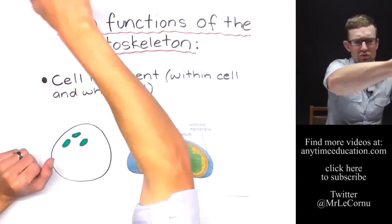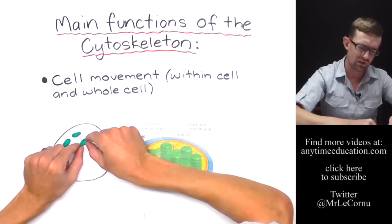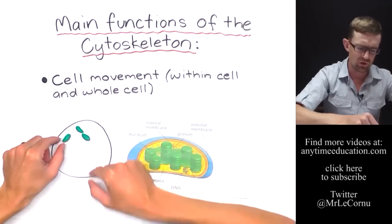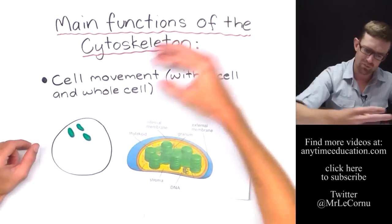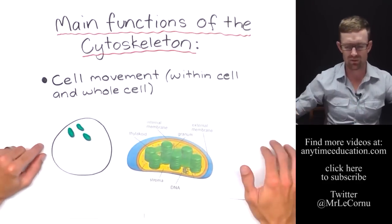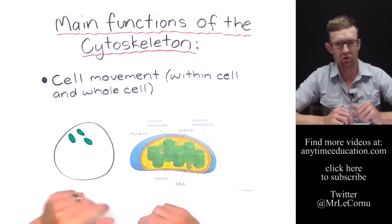And if the sun is then moving and the light is coming from a different angle, the cytoskeleton is able to move the chloroplasts into a different orientation to maximize how much sunlight they're receiving. That's an example of how the cytoskeleton is involved in cell movement.